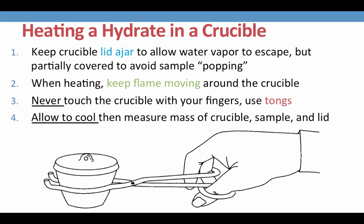When heating your crucible with the Bunsen burner, it is important to keep the flame moving around all the surfaces of the crucible. This will ensure even heating of your sample within the crucible and also avoid burning of the crucible, which can occur if you allow the flame to stay in one spot for too long.